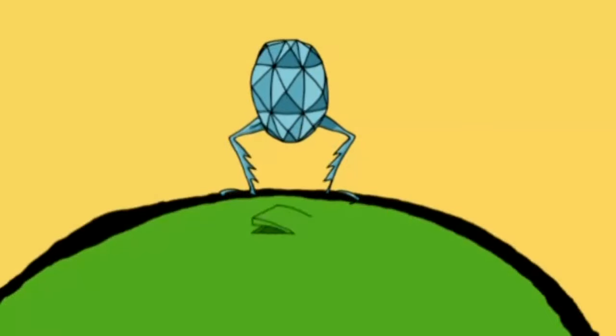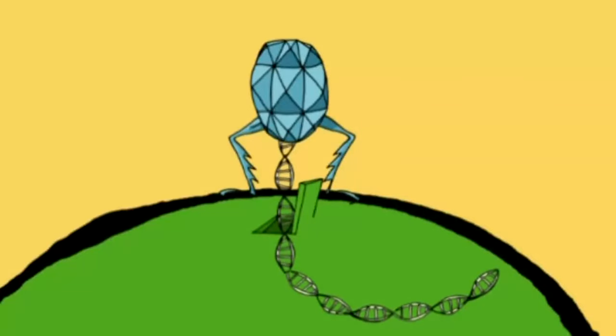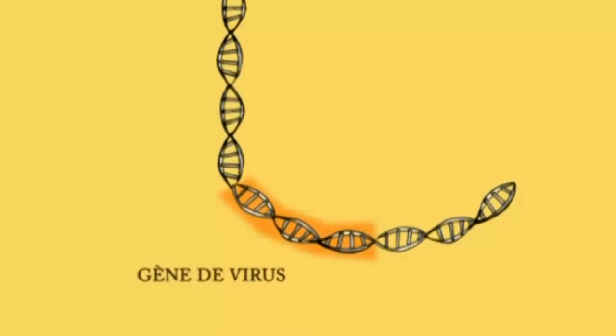Le troisième gène, c'est celui du virus de la mosaïque du chou-fleur. C'est un gène qui permet de s'intégrer dans l'ADN.